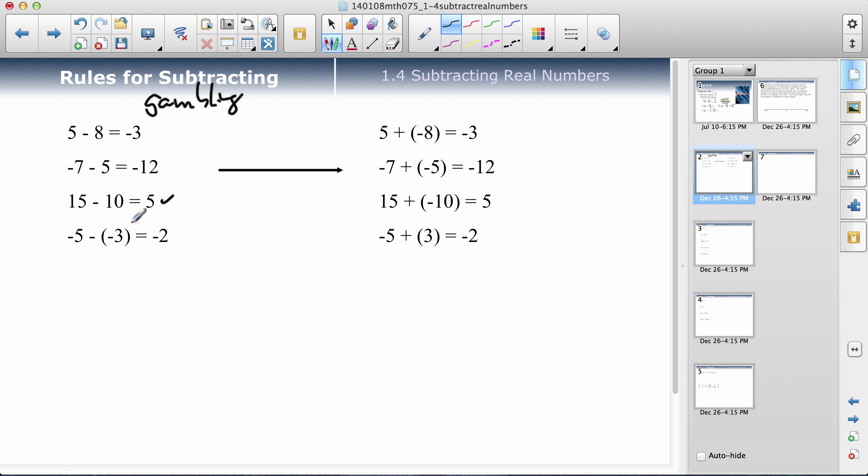So what the book suggests is, rather than worrying about subtracting, they say, why don't you convert all of those to addition? And when you convert something to addition, like if I have 5 take away 8, to convert that to addition, what I do is I change this minus here to a plus. But when I change that, then I have to change the sign of the 8. So the 8, instead of being positive, changes to a negative 8. So this question and this question are the same.